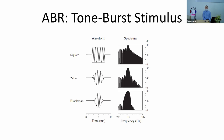Another widely used and frequency-specific stimulus is the toneburst. You can see its waveform and spectrum, and different window functions can make this stimulus even more frequency-specific. The most widely used window function is Blackman, which produces the most frequency-specific toneburst spectrum.